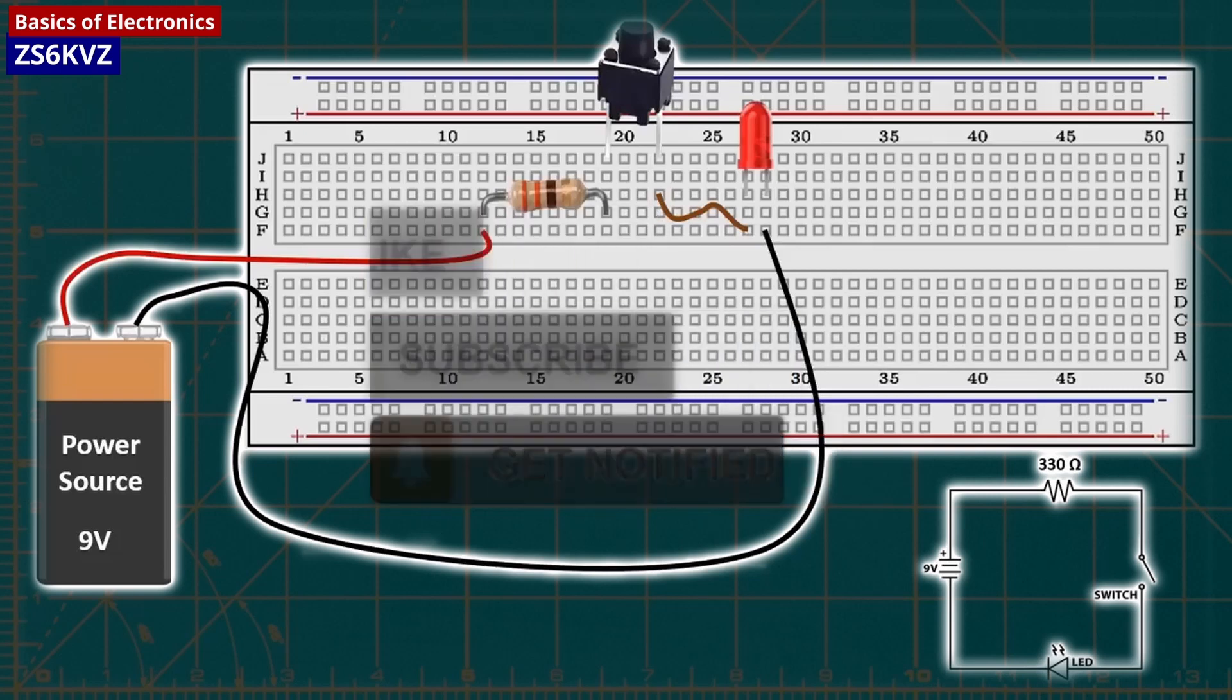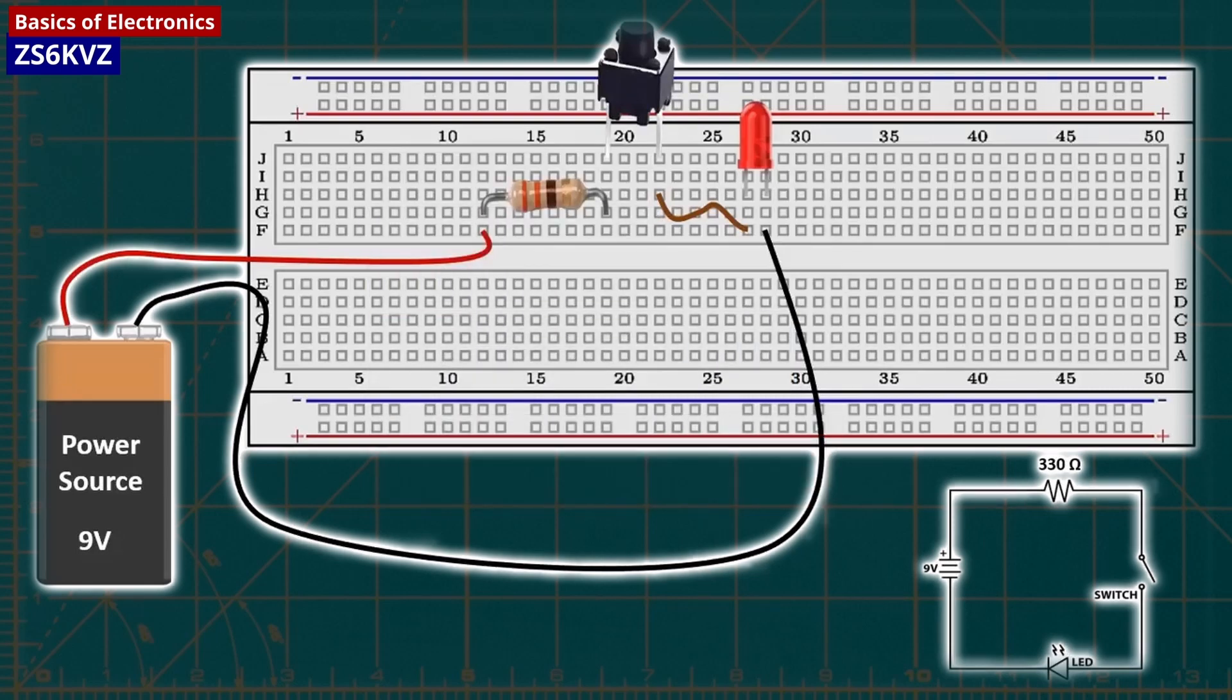The graphical resistance calculator can be used to look up the color code for a 330 ohms resistor.